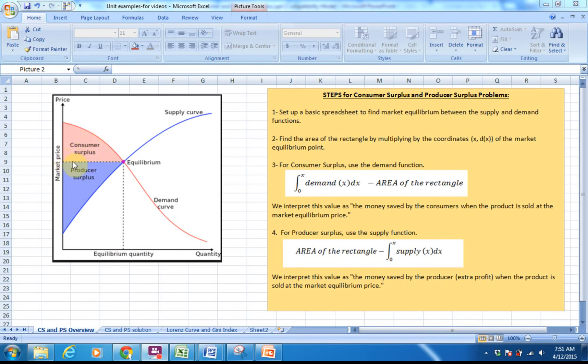which is above the rectangle but below the line of the demand curve. For producer surplus, we're going to be looking at the area that's above the supply curve but below the area of the rectangle.